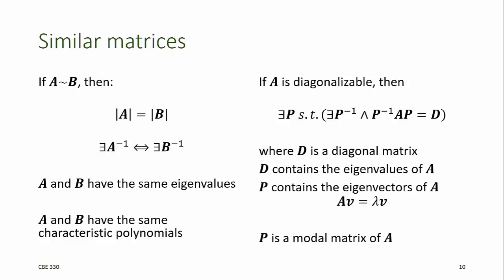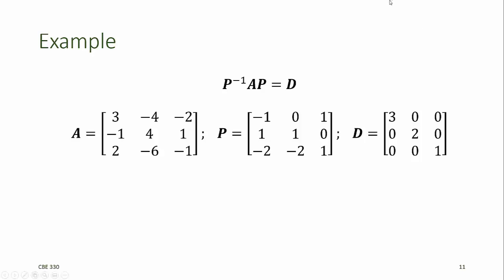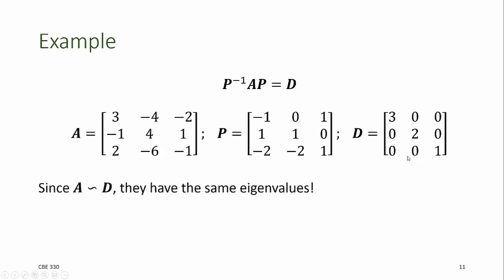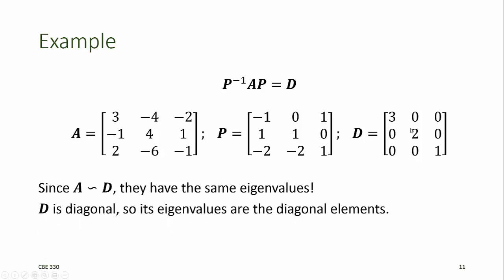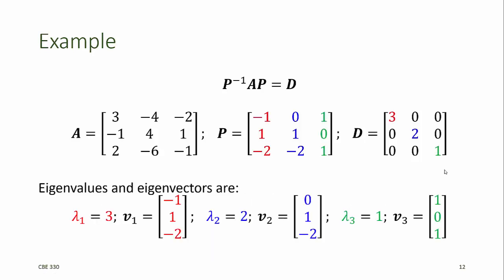We also say that P is a modal matrix of A. For example, for the matrix A shown here, we can find a matrix P that satisfies the similarity transform on A to obtain a diagonal matrix D. Since A is similar to D, they must have the same eigenvalues. And since D is diagonal, its eigenvalues are the diagonal elements: 3, 2, and 1. The columns of P represent the eigenvectors of A, where the first column is the eigenvector associated with 3, the second with eigenvalue 2, and the third with eigenvalue 1. So by finding the matrix P and performing the similarity transform, we have solved the matrix eigenvalue problem.